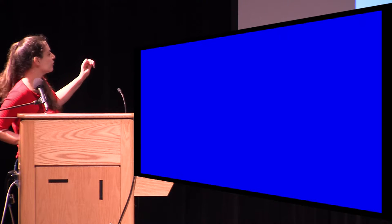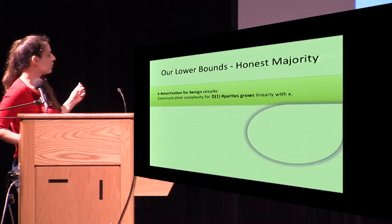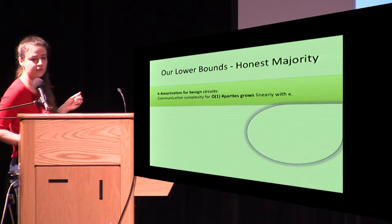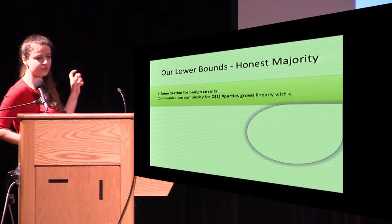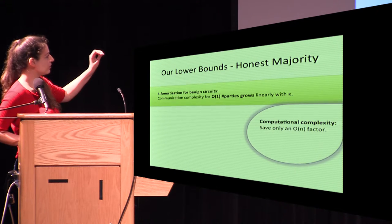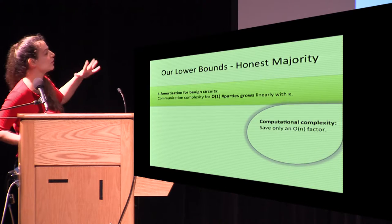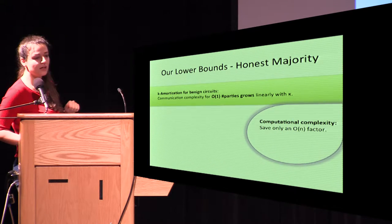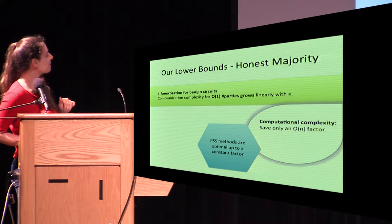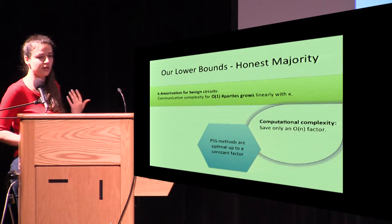If the number of parties is constant, we showed that the communication complexity must indeed grow linearly with k. For a restricted class of secret-sharing schemes — good enough to include Shamir's secret sharing — we also proved something about computational complexity: every party must work hard. You cannot have lazy parties doing sublinear computation in k. This proves that current methods based on packed secret sharing are optimal up to constant factors.